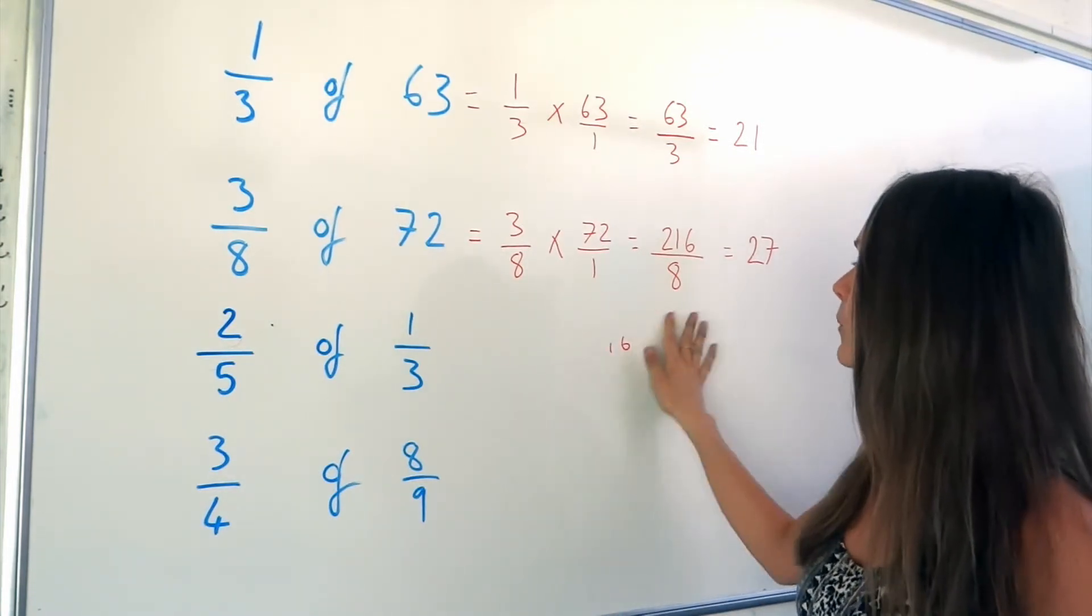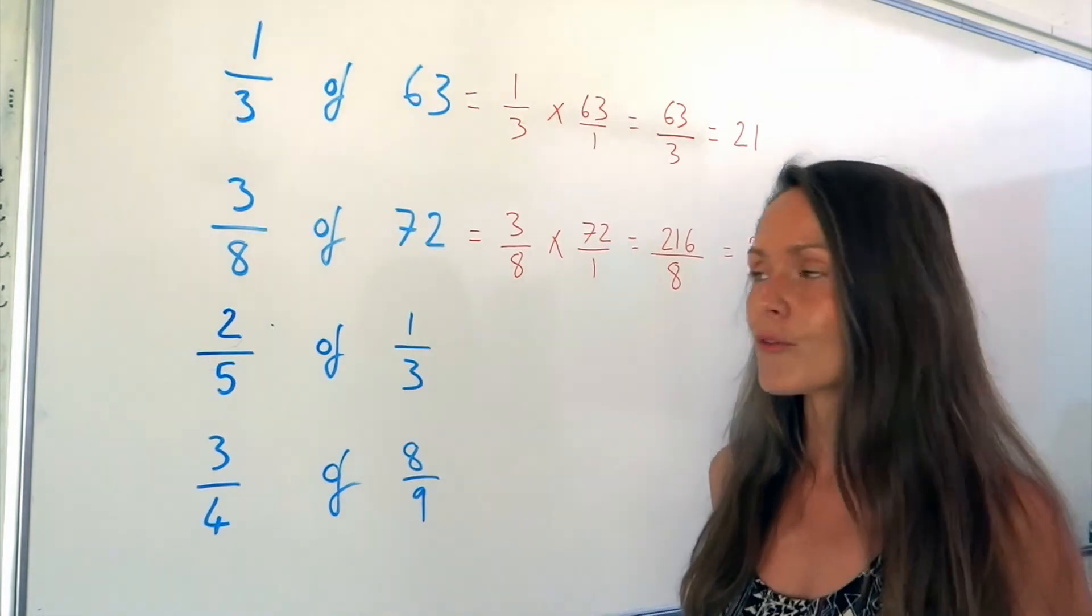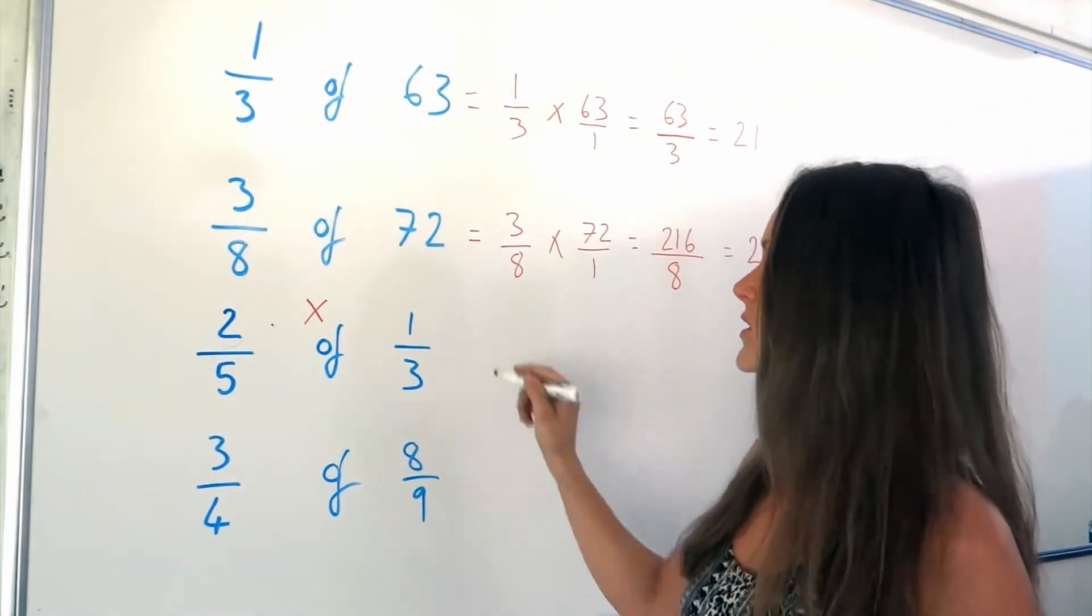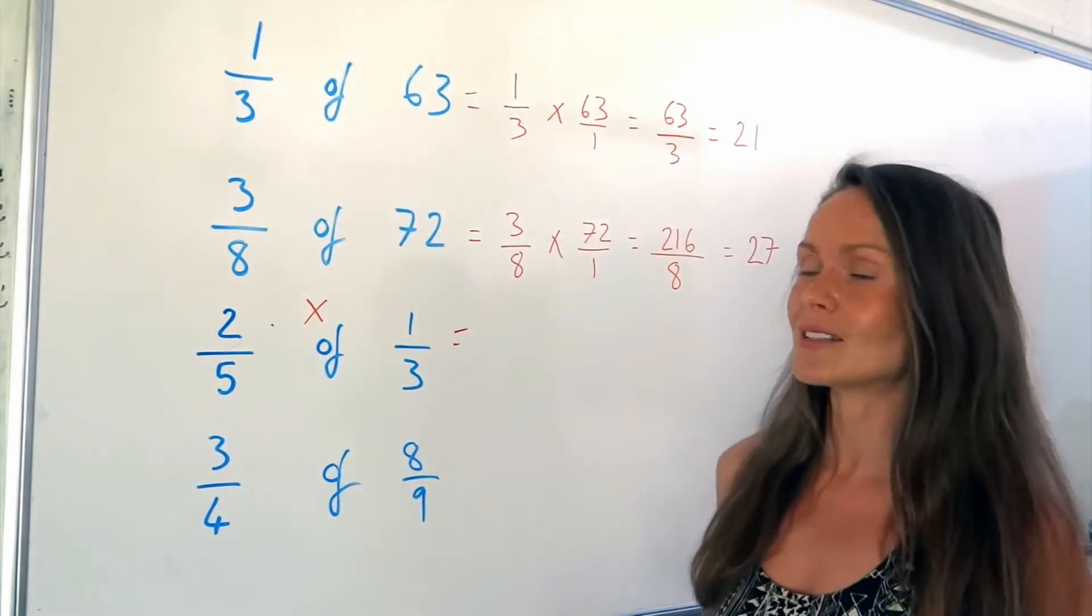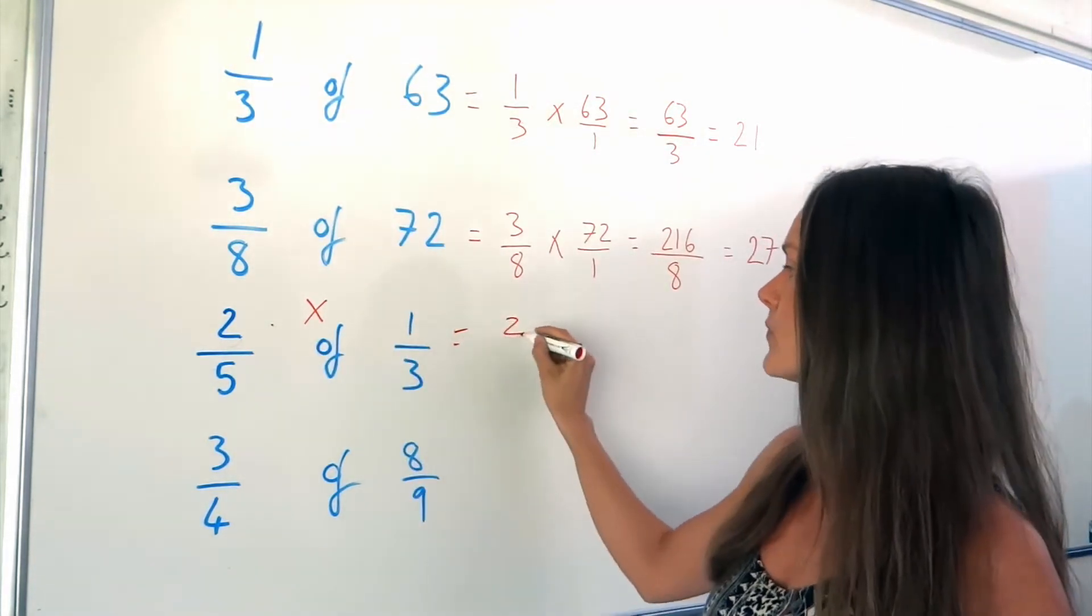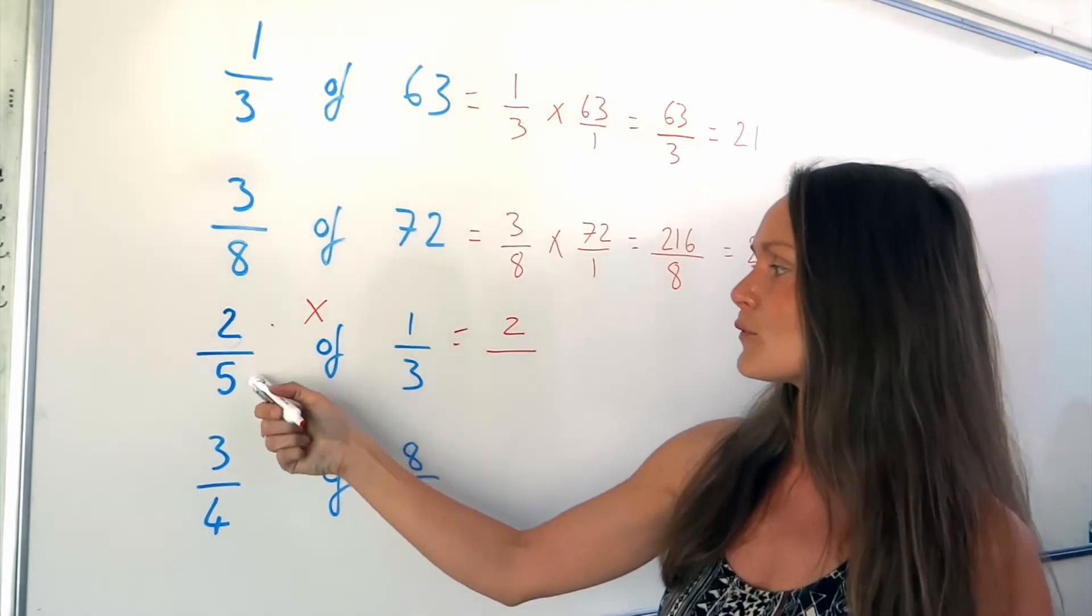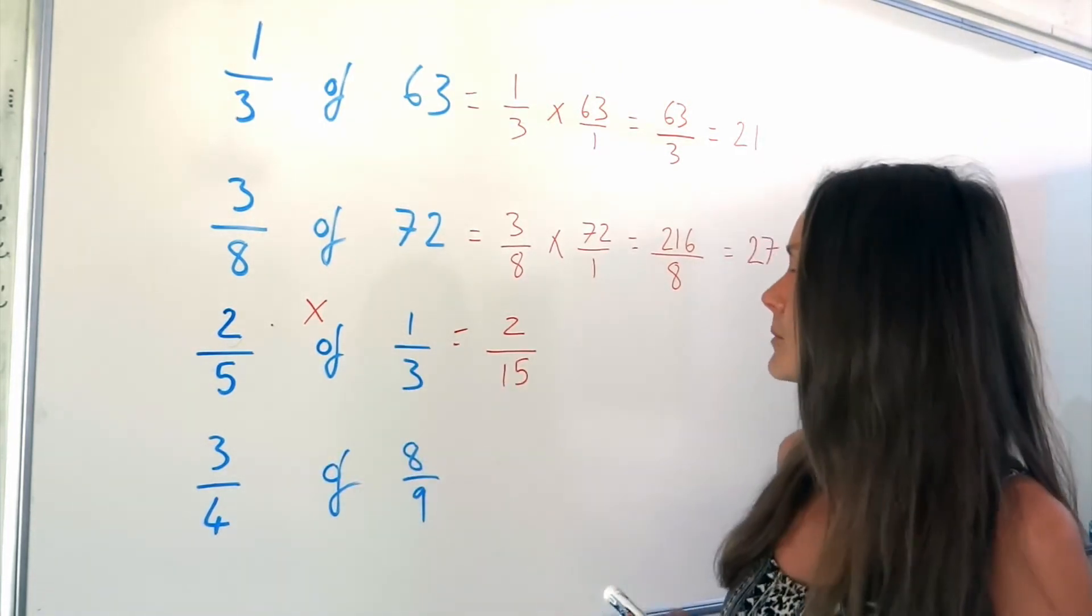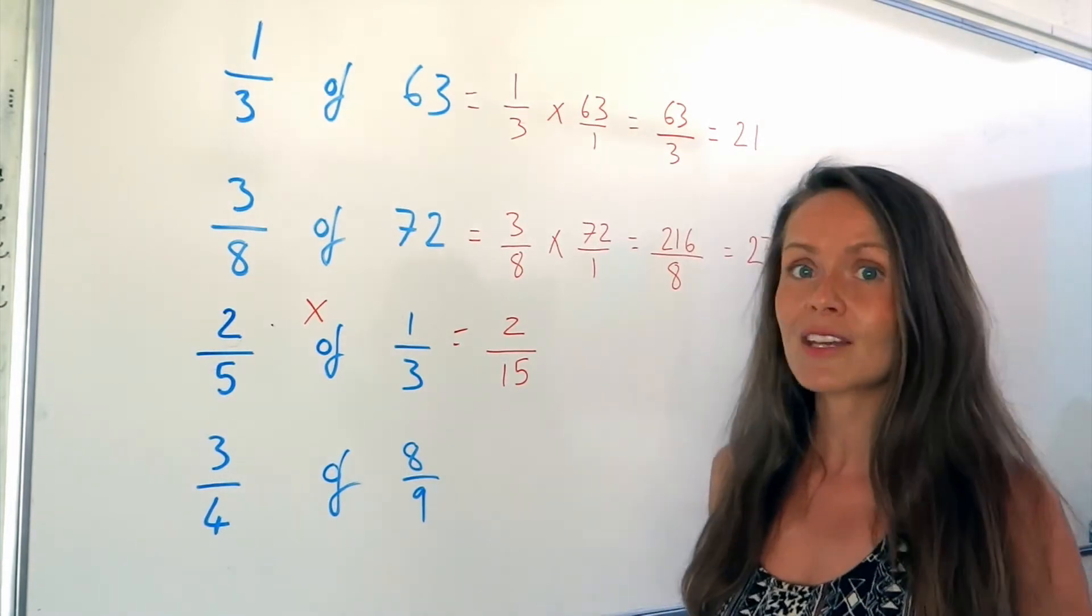On to the next one. So now we're working out the fraction of another fraction. But again, we're just multiplying them together. So I'm going to multiply the numerators. So 2 times 1 is just 2. And then the denominators. 5 times 3 is 15. And that's it. I can't even simplify this fraction, so I found the answer already.